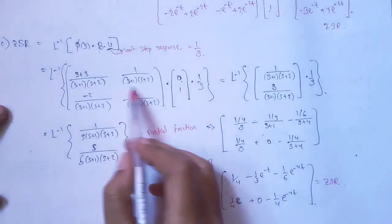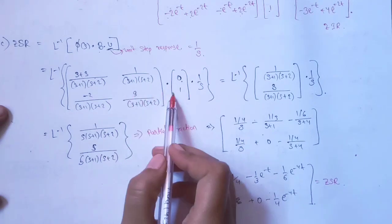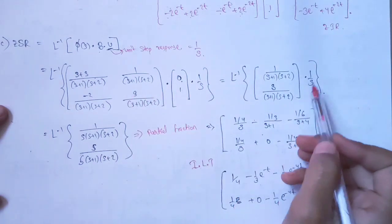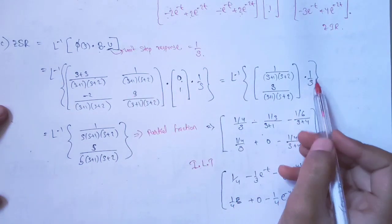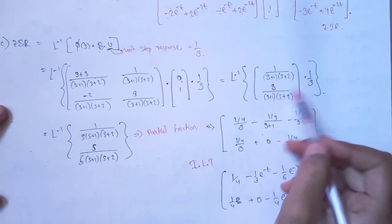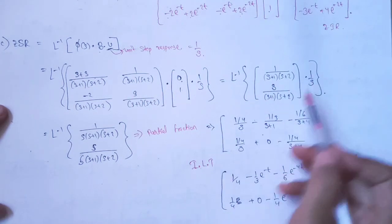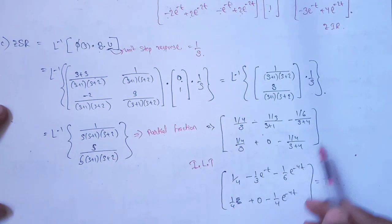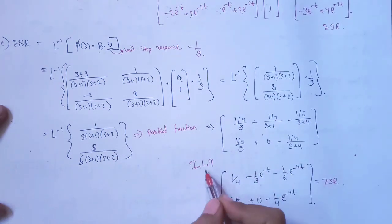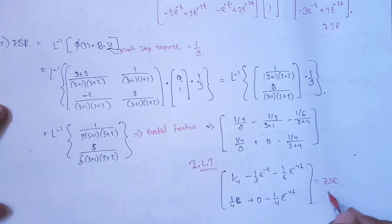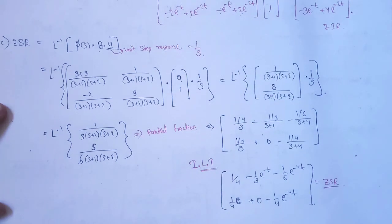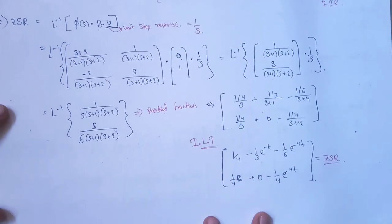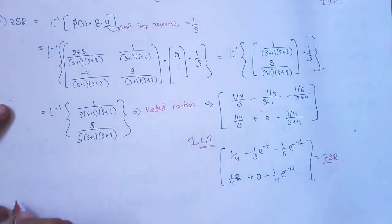After multiplying the two matrices and multiplying all elements by 1/s, we performed partial fractions to get a new matrix. Applying the inverse Laplace transform to that matrix gives us the zero state response.